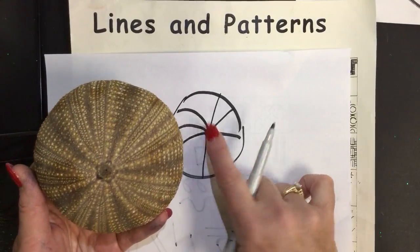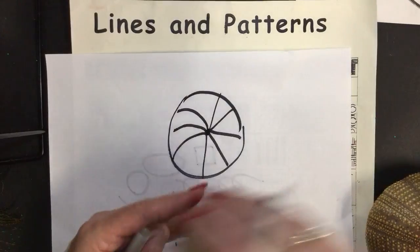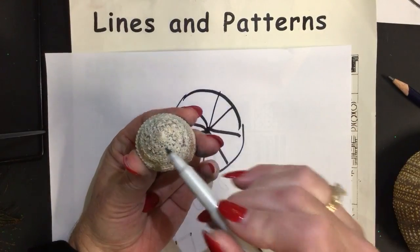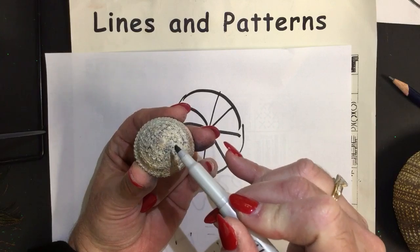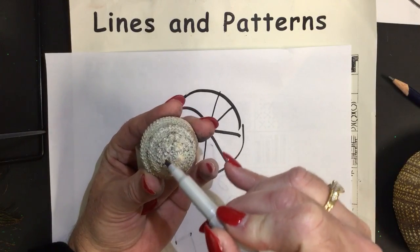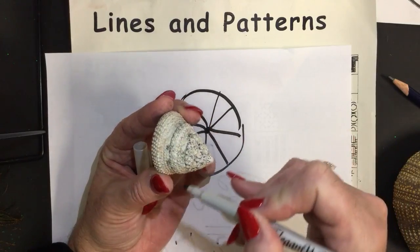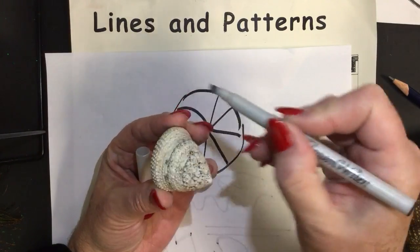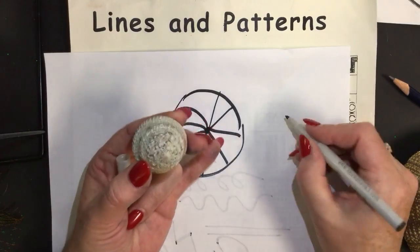Here is an example of radial lines that come out from a center in nature. The pattern of line starts out here and rounds around and wraps around and around and around. This is an example of a spiral in nature.